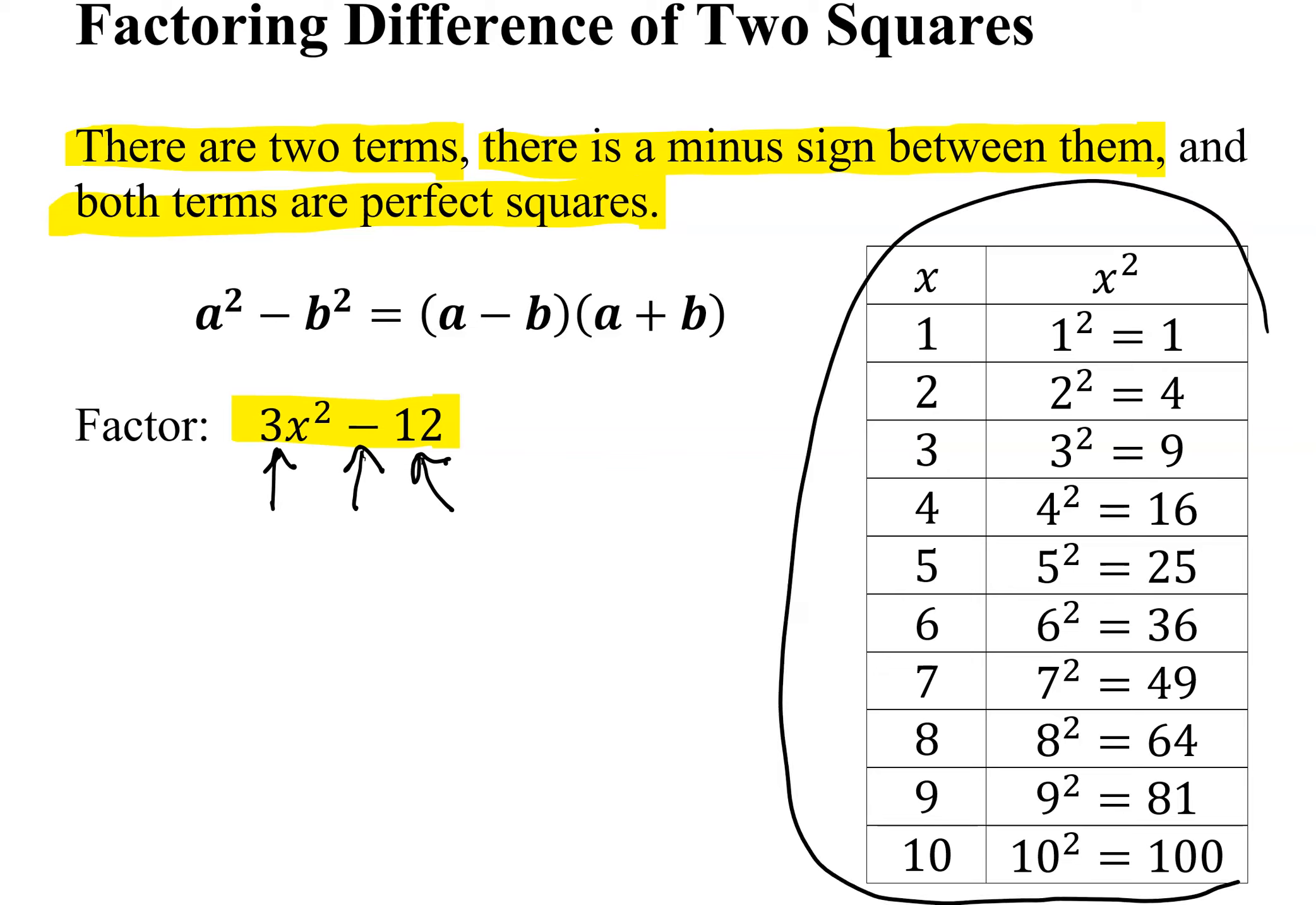Well looking at our table over here, this is the column where we have all our perfect squares. I definitely do not see a 3. There's no 3 here. And there's no 12 here. So at this point you might think I can't factor using the difference of two squares.